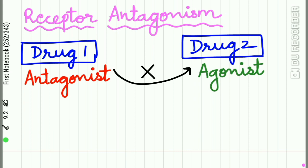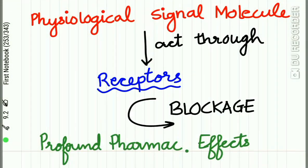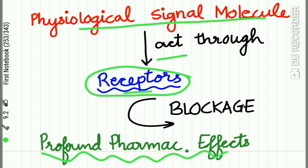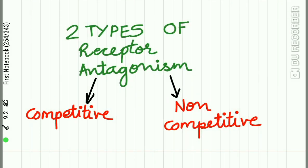In receptor antagonism, one drug acts as an antagonist and blocks the receptor action of another drug — the agonist. This is a very important type of antagonism. Physiological signal molecules act through receptors, and if these receptors are blocked by a certain antagonist, there are profound pharmacological effects because the physiological signals cannot act. There are two types: competitive and non-competitive.